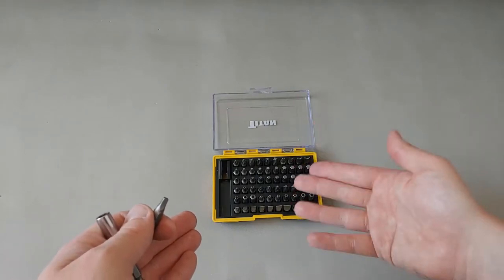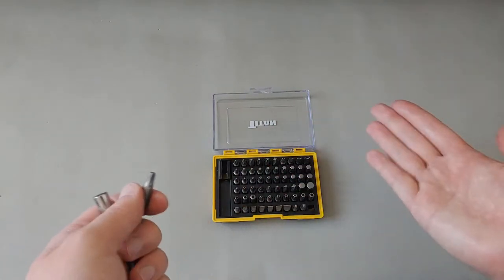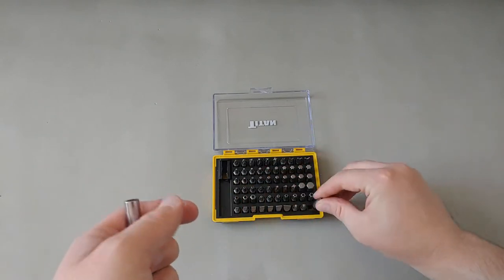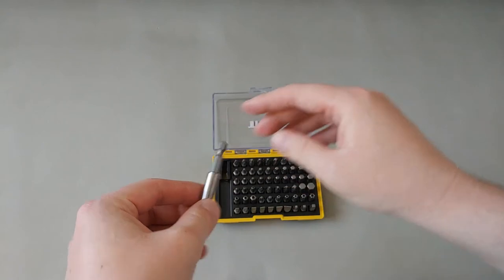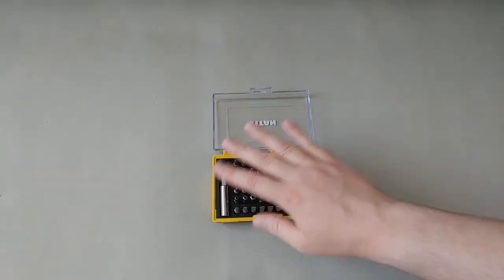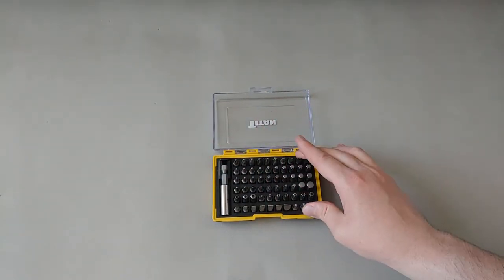On Amazon this bit set can be maybe 10 to 20 dollars. It's 61 pieces. The 61 pieces is including this bit holder, otherwise it's 60 pieces.